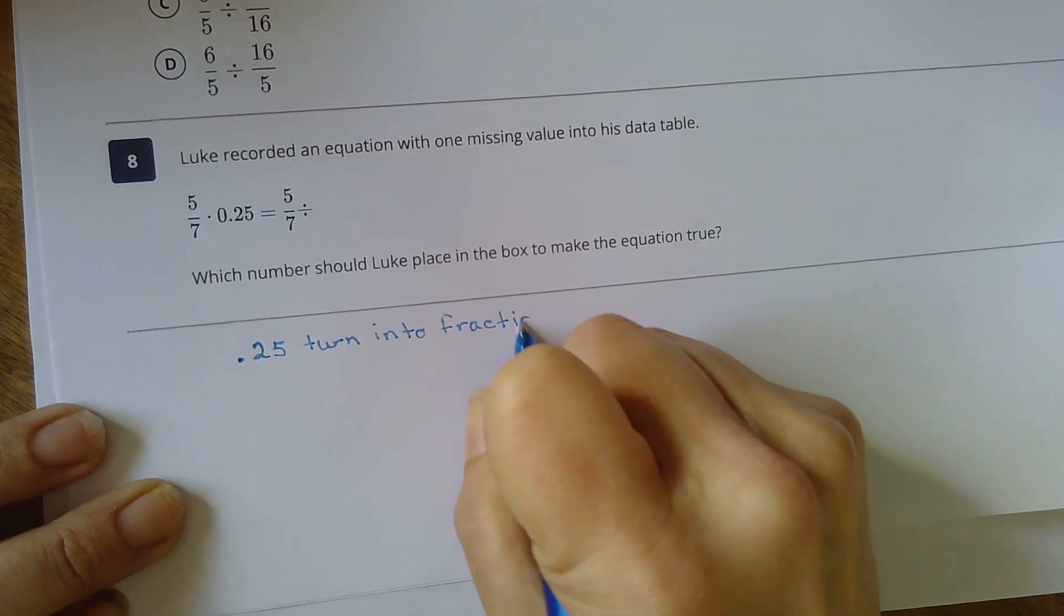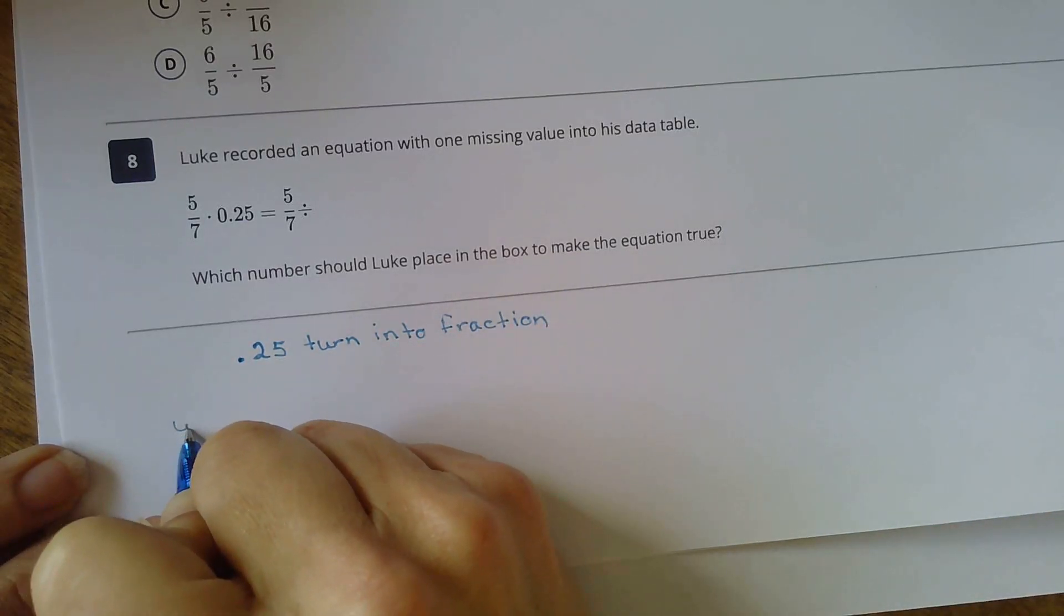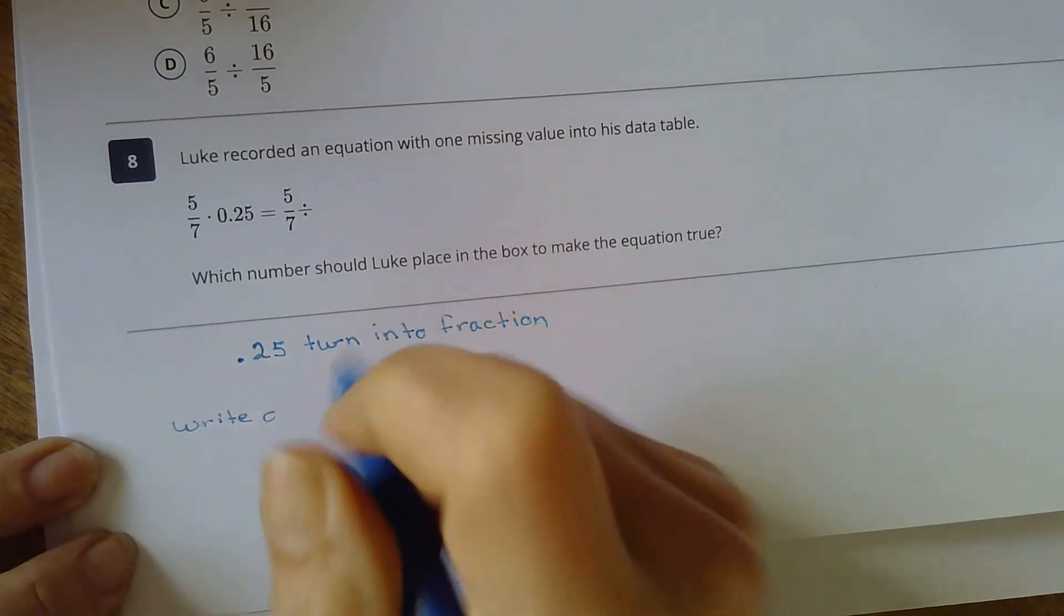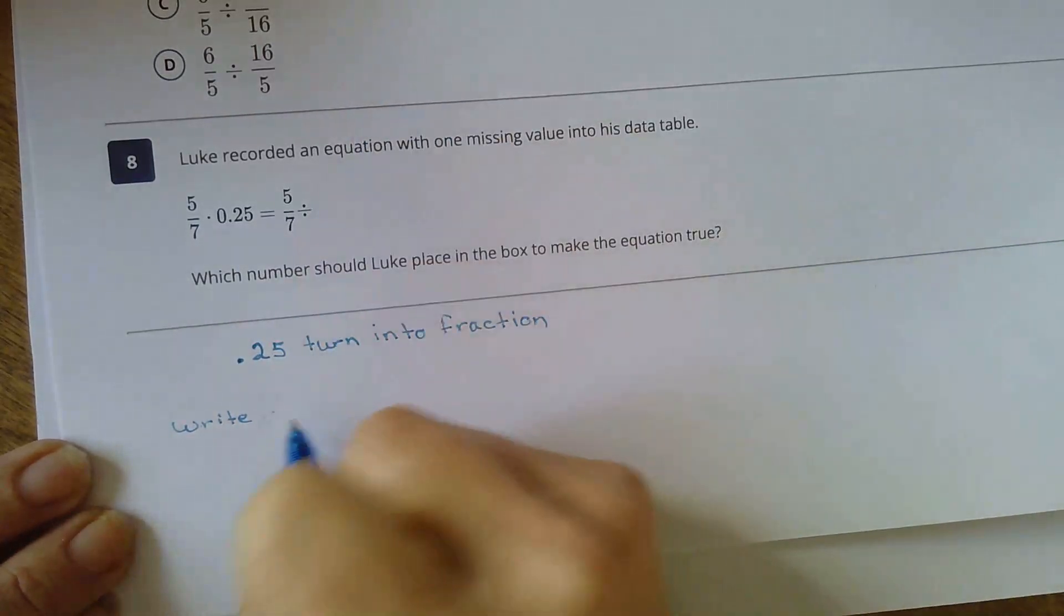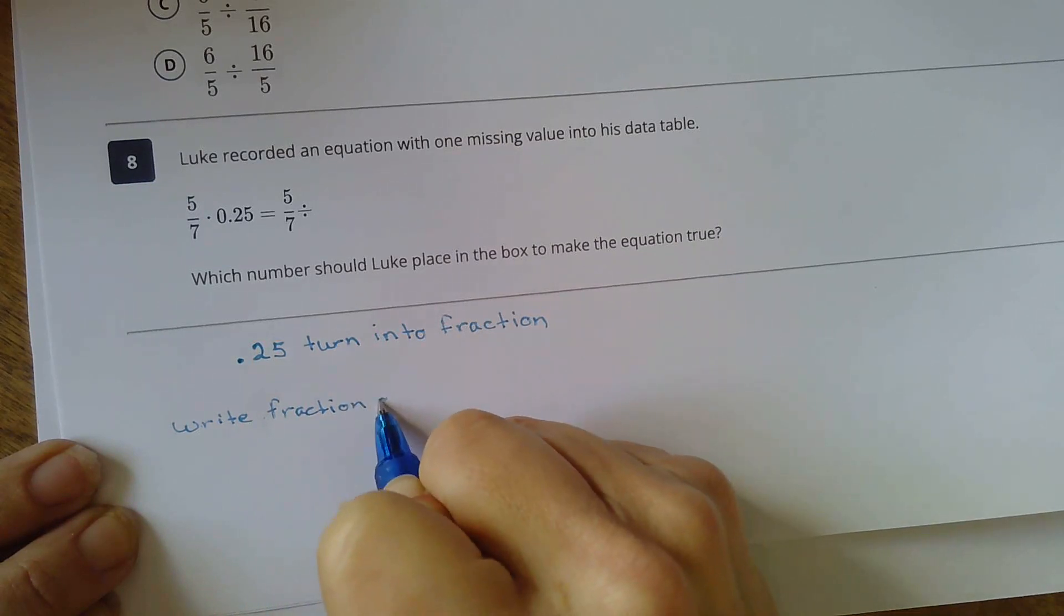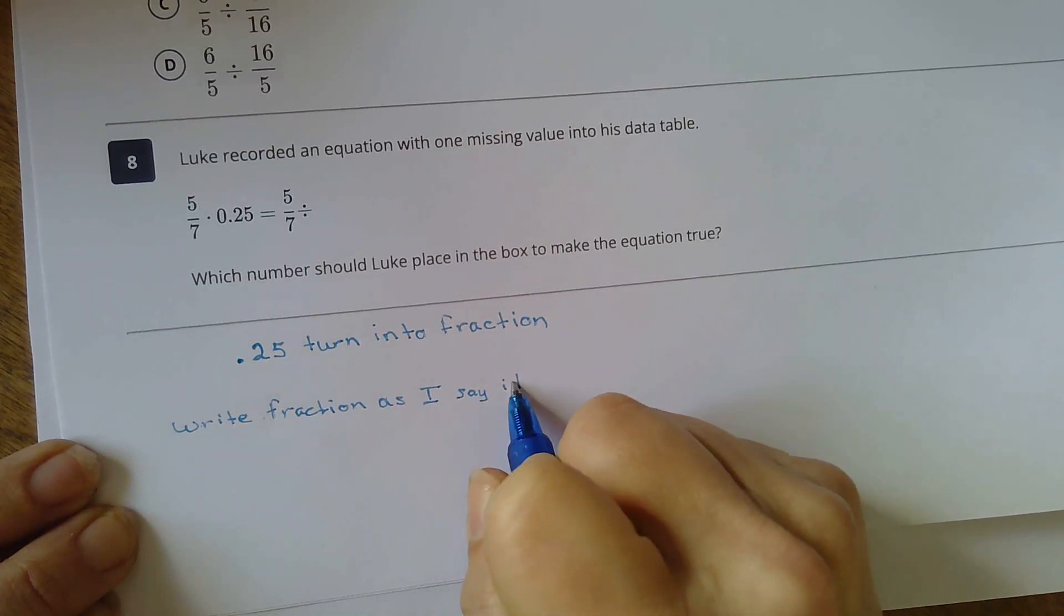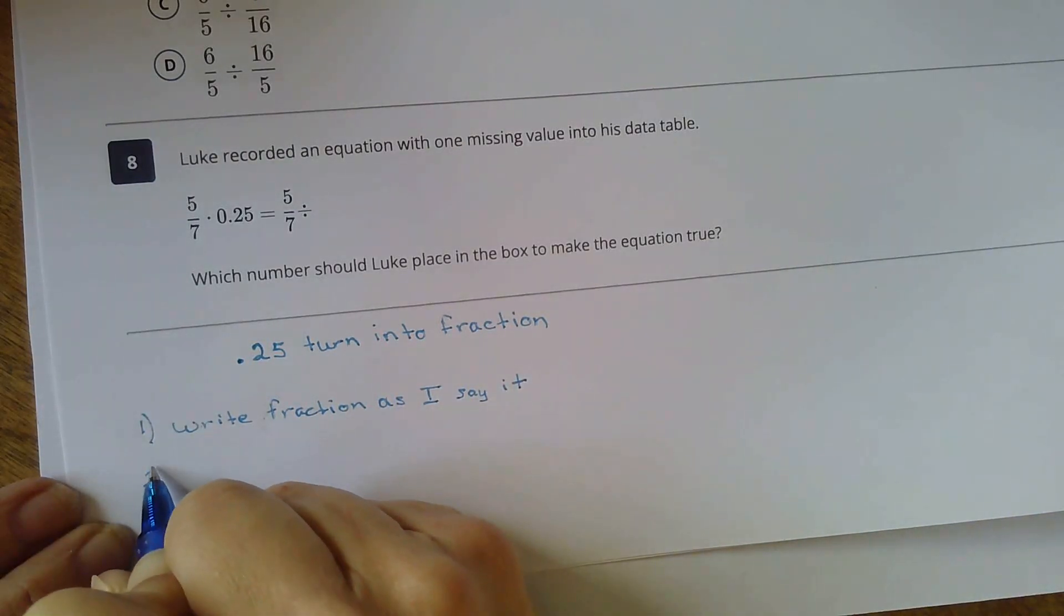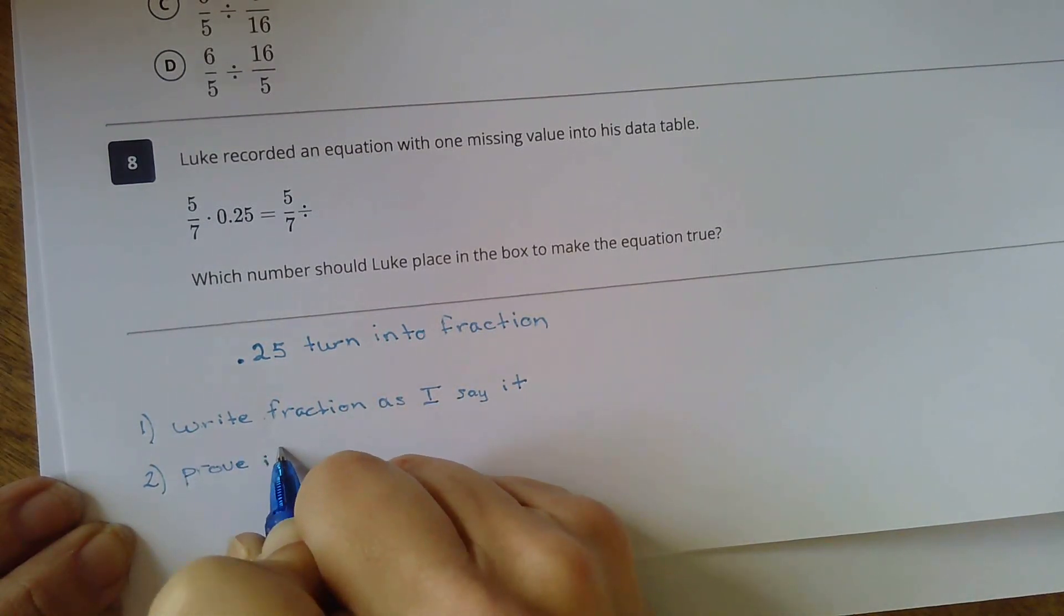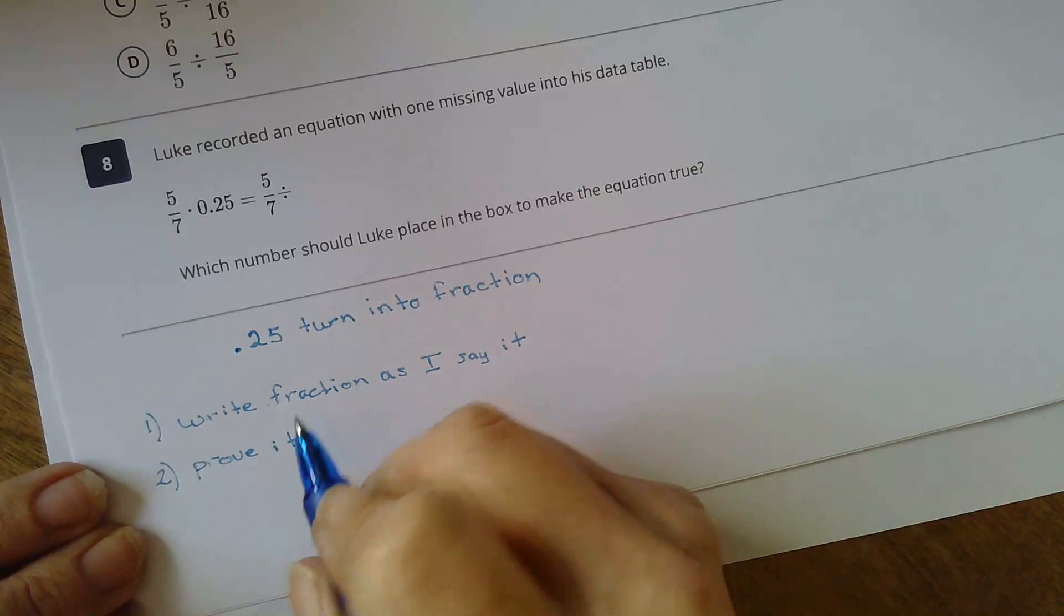How do I do that? Well, I'm going to write the fraction as I say it. The first thing I'm going to do, and two, I'm going to prove it. That's my visible thinking. So this is 25 hundredths is what it says. Well, I need to prove it with place value.